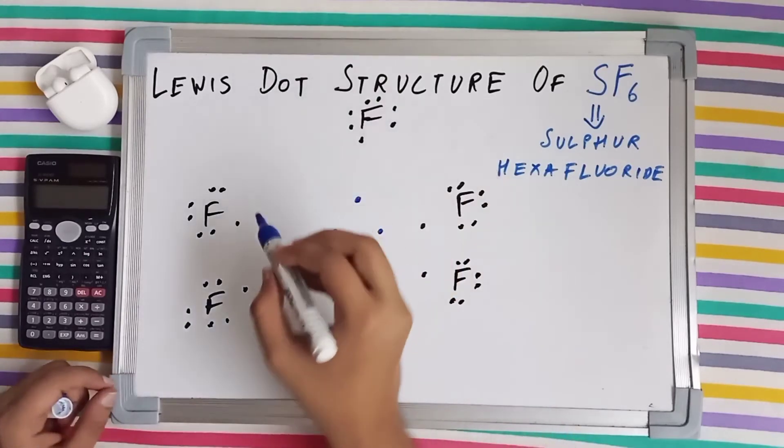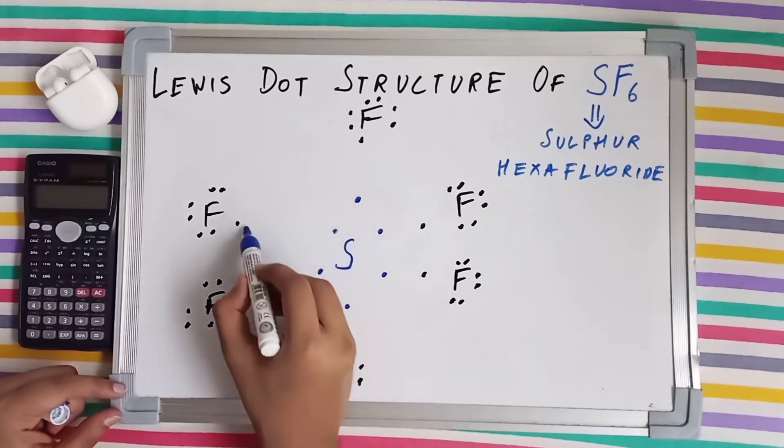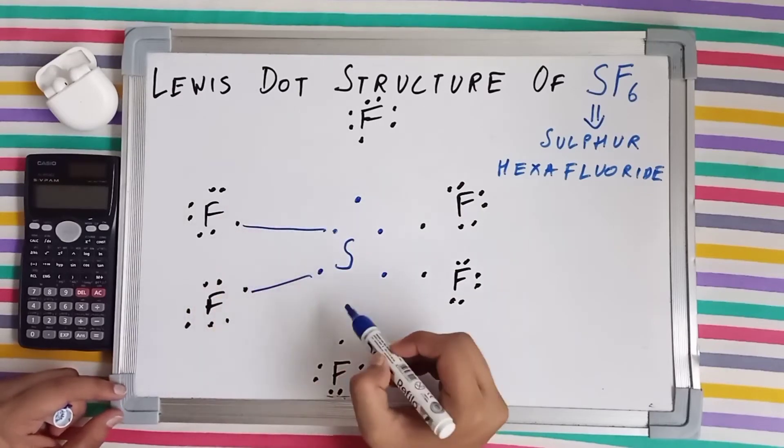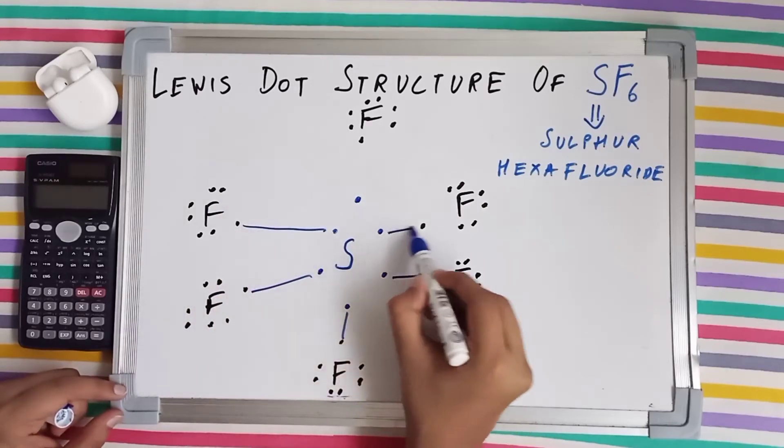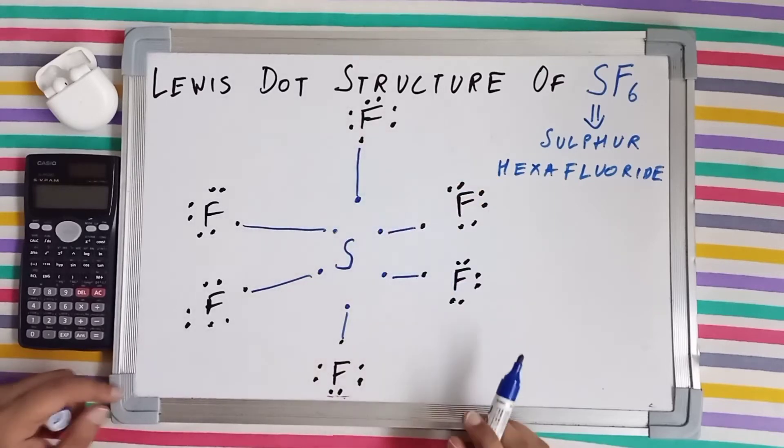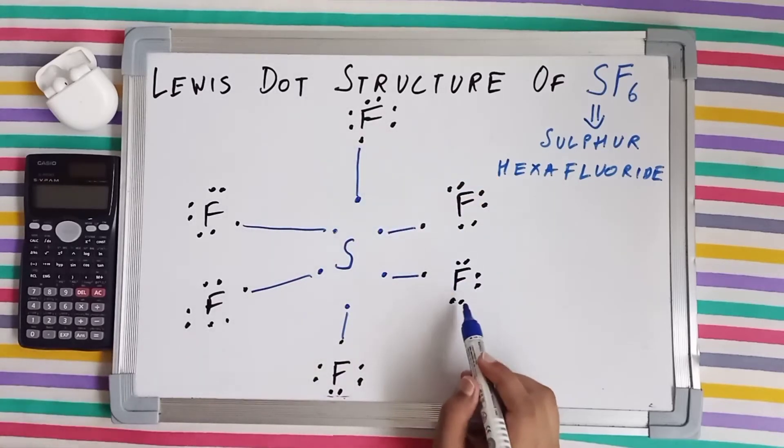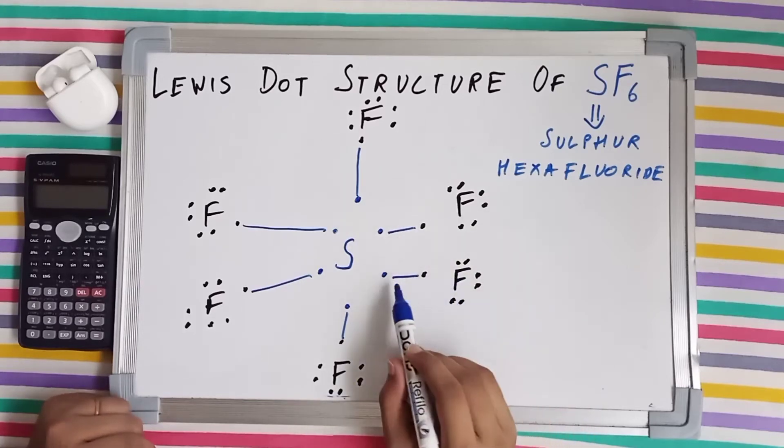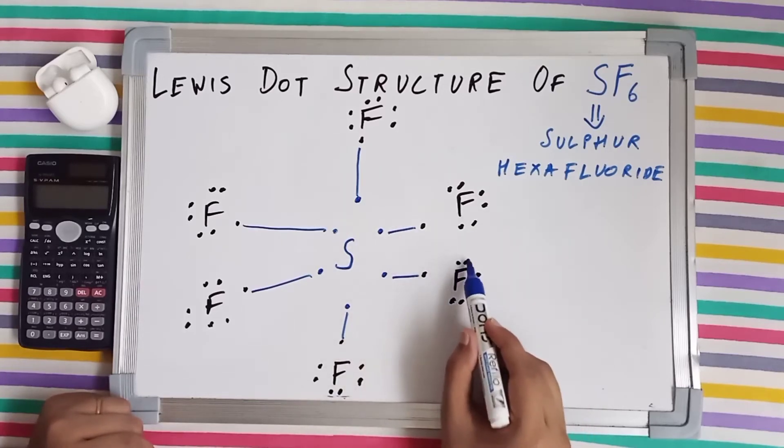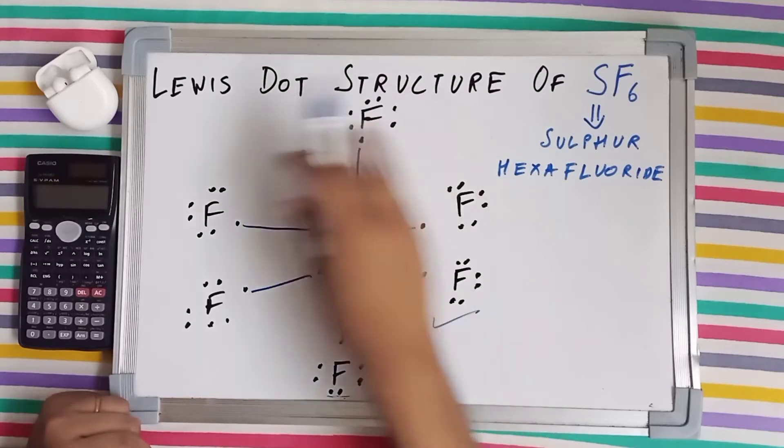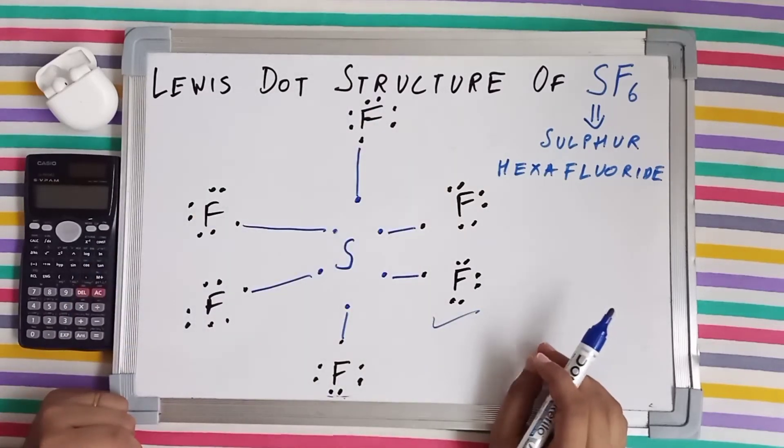So each fluorine will make a single bond with sulfur. And what happens after making a single bond with sulfur, fluorine now has completed its octet. Let's count the number of electrons. Fluorine has eight electrons, which means all of the fluorines have completed their octet.